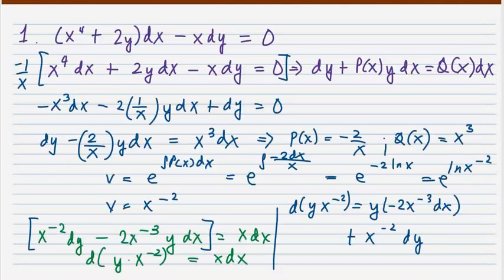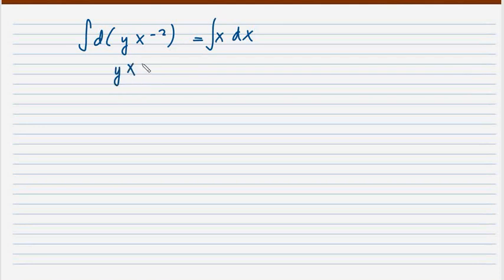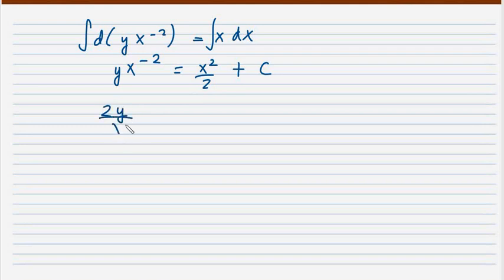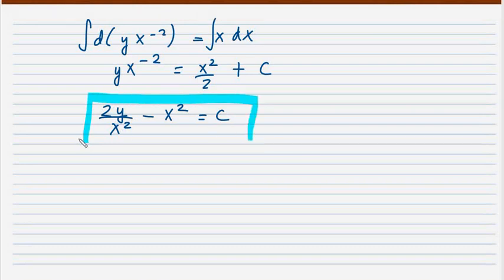So we have d(y · x^(-2)) equals x dx. Integrating both sides gives y · x^(-2) equals x squared over 2 plus C. Multiplying through by 2 and rearranging: 2y over x squared minus x squared equals C. That is the final answer.